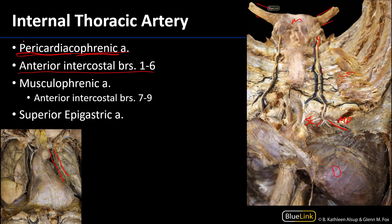These are the branches of the internal thoracic artery — I think of them as PAMS, P-A-M-S. We've discussed the intercostal space, the blood supply to and from it, and the branches of the internal thoracic artery. Thank you very much for your time.